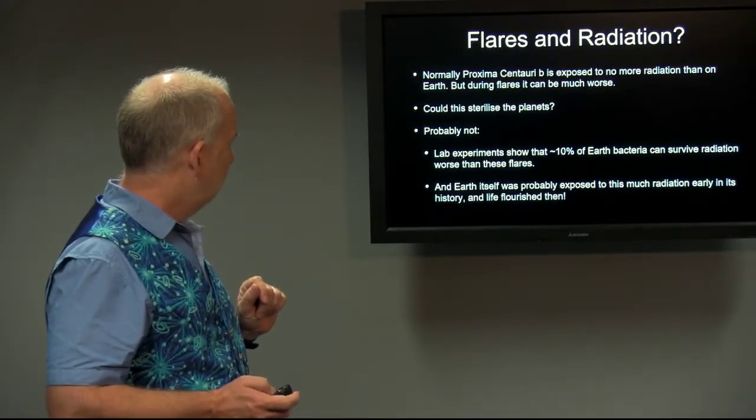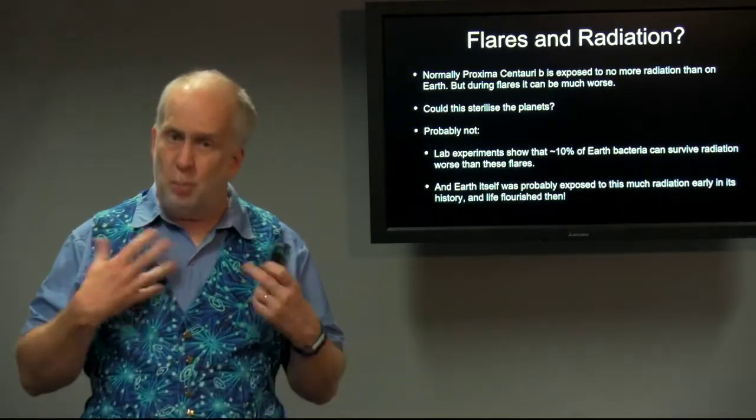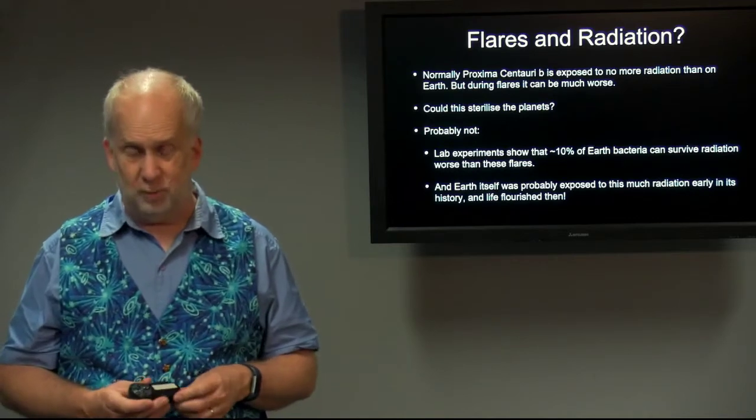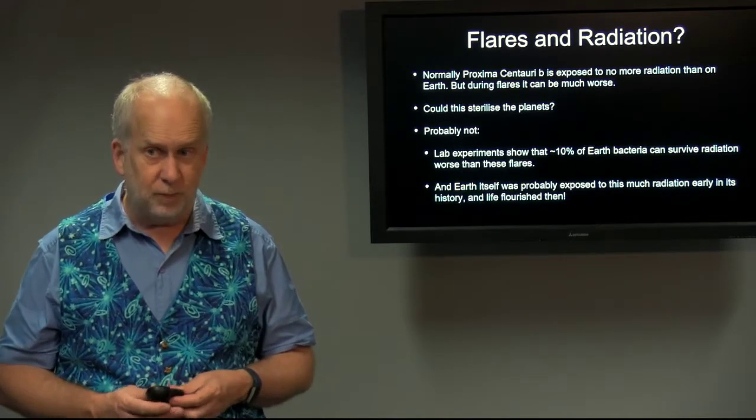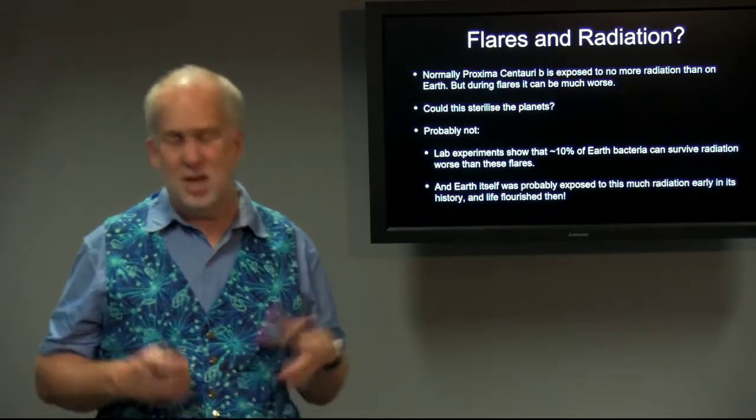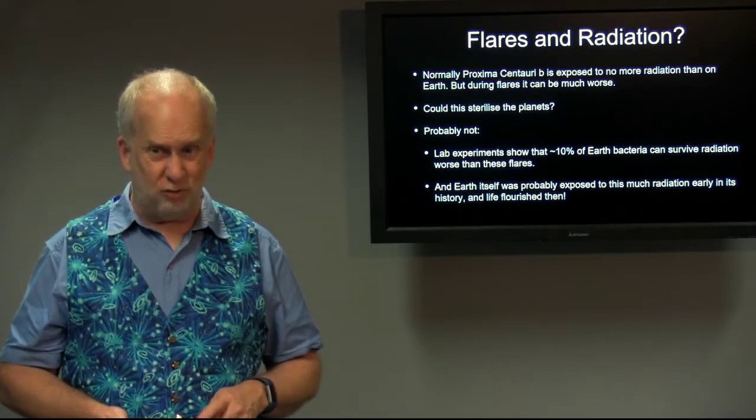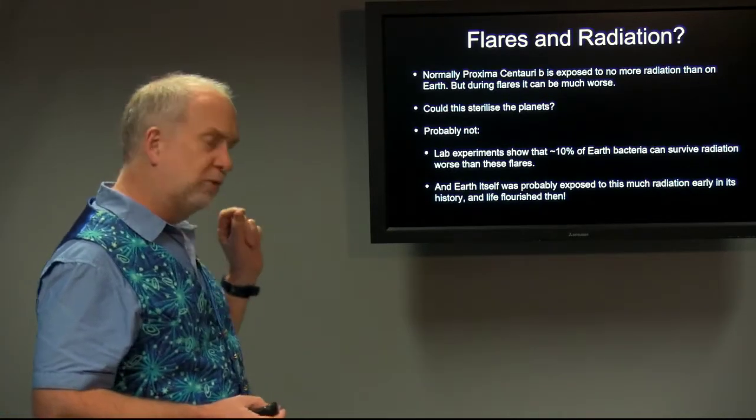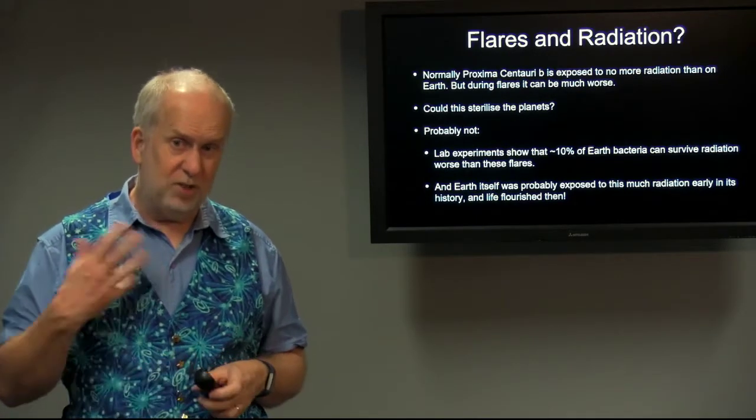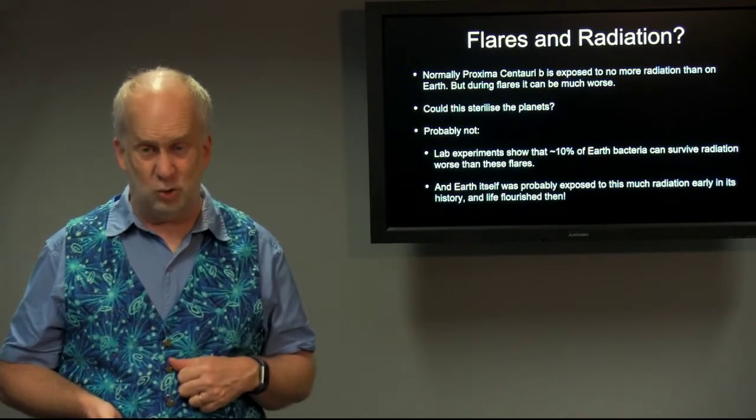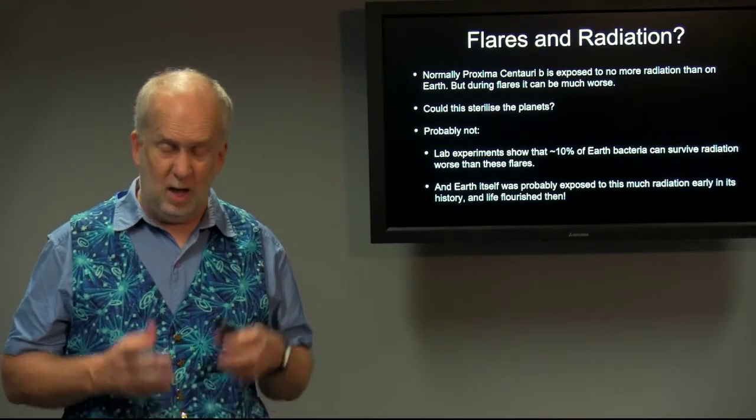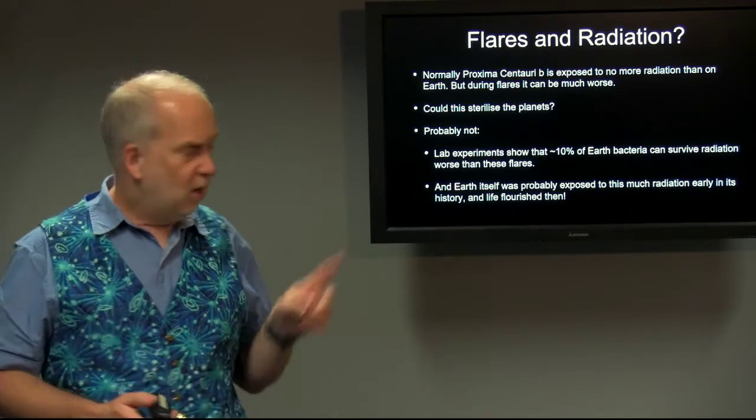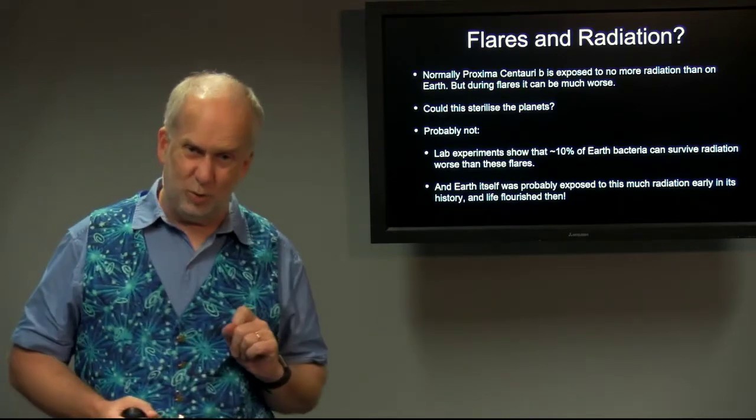So flares and radiation: on average, red dwarf stars actually don't put out that much radiation. The normal day-to-day radiation dose that Proxima Centauri b gets is no worse than the dose the Earth gets on average. The difference is only during the flares, and the flares are fairly rare. So day-to-day you're fine, but the flares are pretty nasty with a lot of radiation. We can expose Earth bacteria to the same sort of radiation that they would get during the middle of a really nasty flare of Proxima Centauri, and it kills most of them, but about 10% survive. Evolution is going to keep them going, and they'll evolve highly radiation-resistant bacteria.